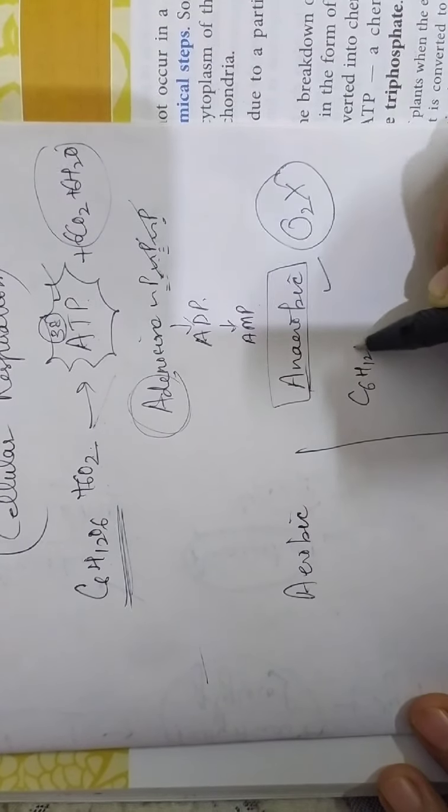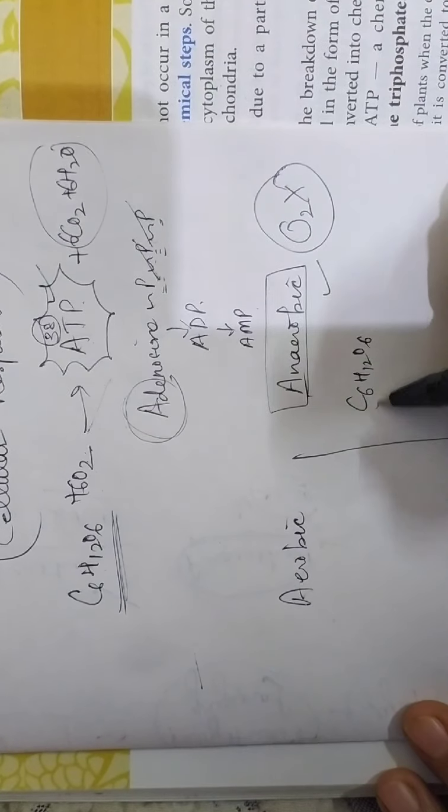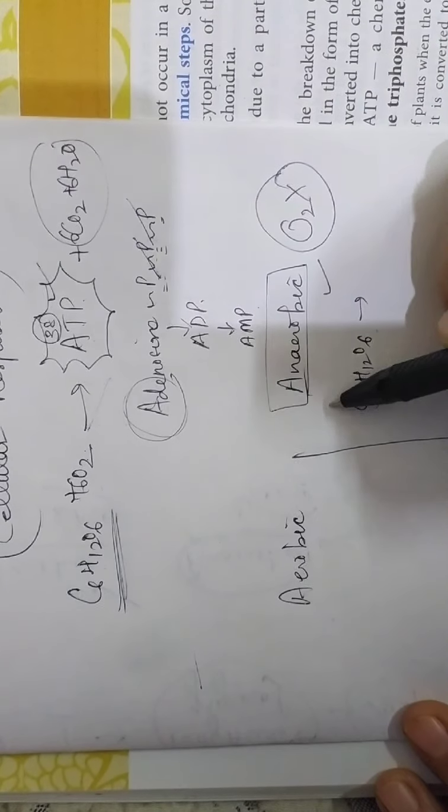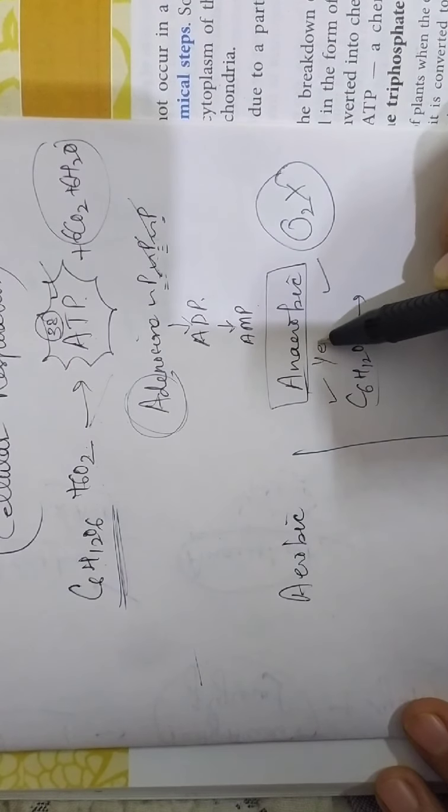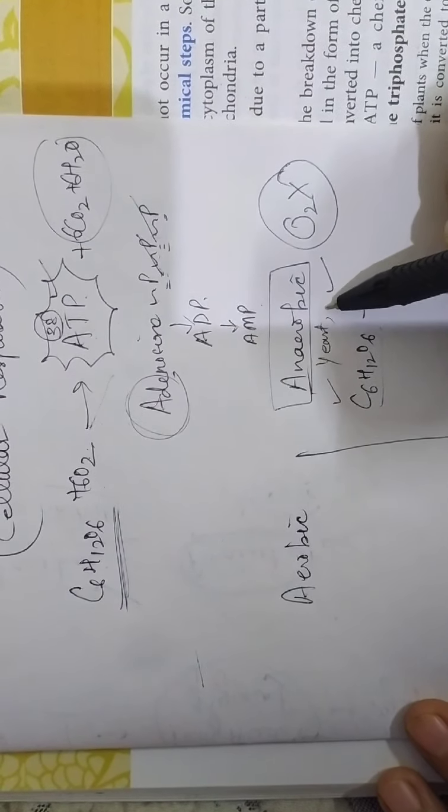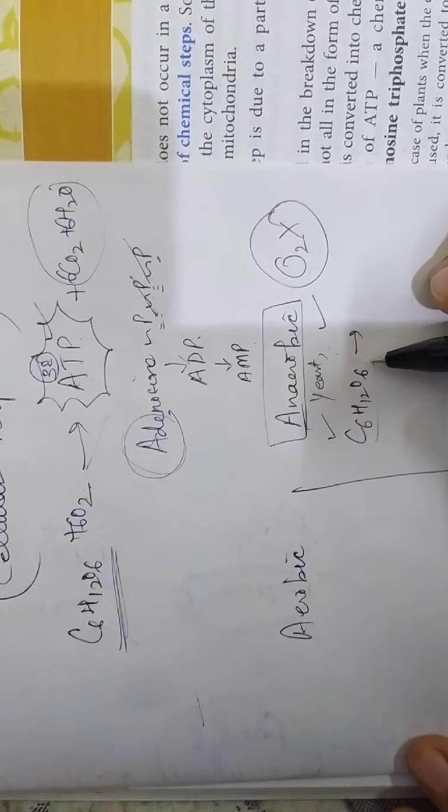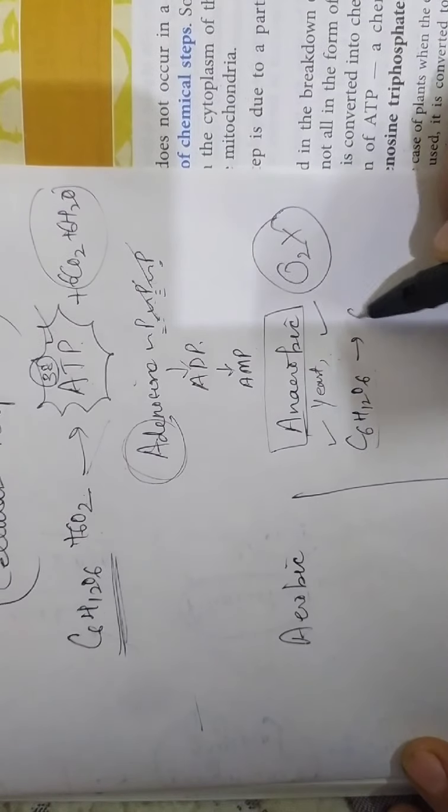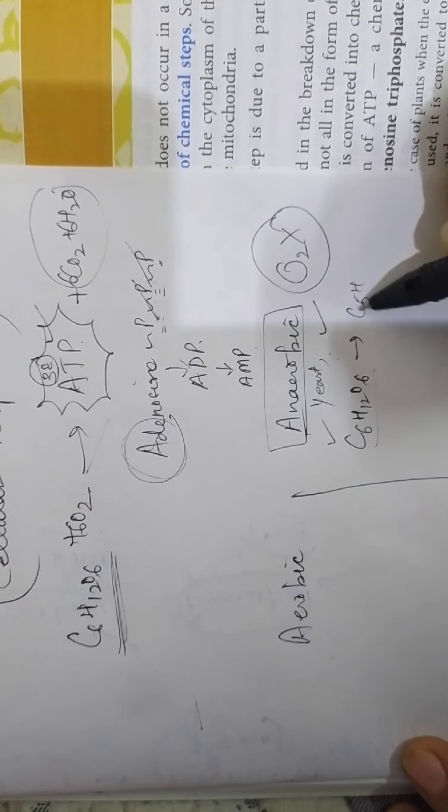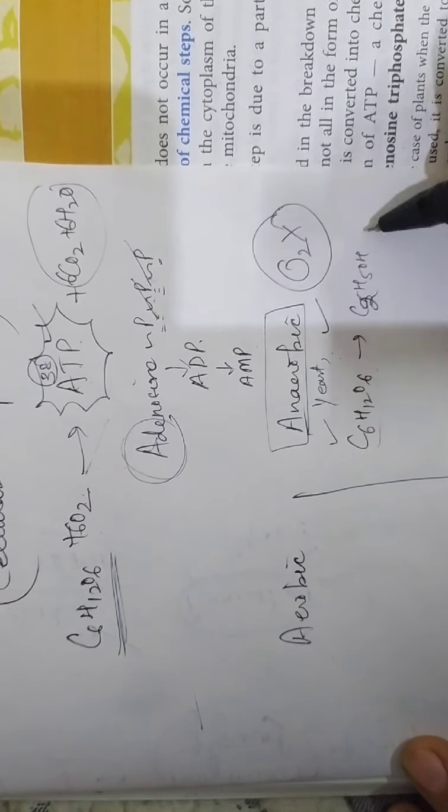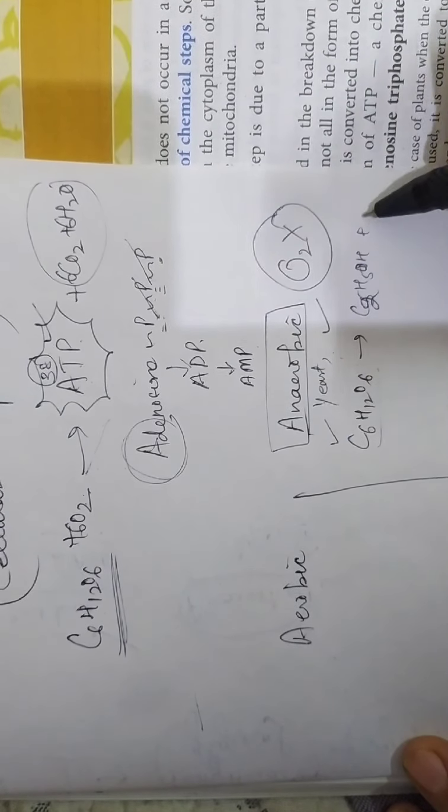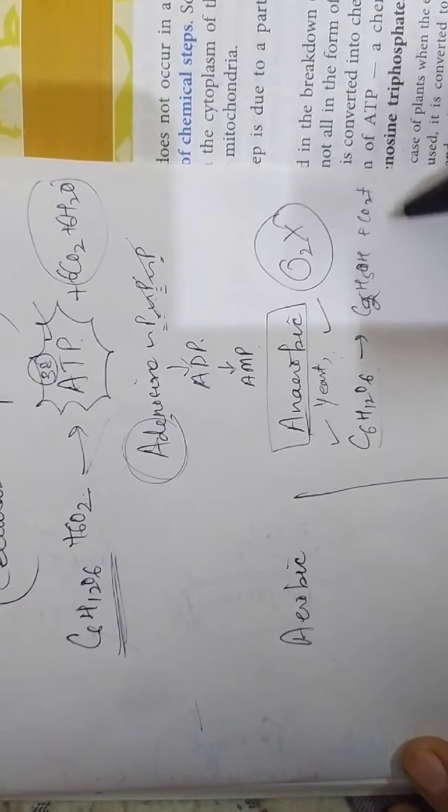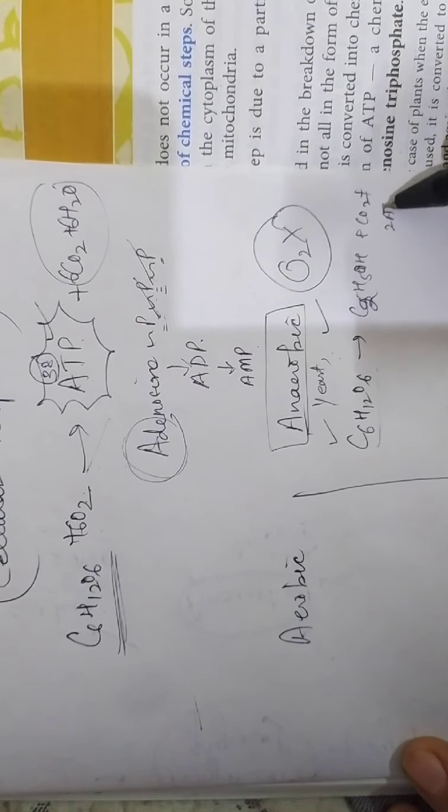Here oxygen is not required, in the absence of oxygen. So here actually incomplete breakdown occurs, incomplete breakdown of glucose. Glucose will break down without oxygen. This process is the characteristic of some yeast, some bacteria, some fungi, where we call this process as fermentation. And this produces ethyl alcohol C2H5OH and carbon dioxide. And only two molecules of ATP are produced.